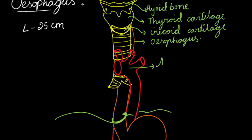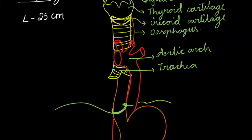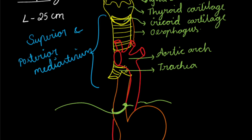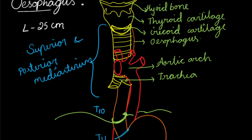There comes the aortic arch, running downward as the thoracic and abdominal aorta, and the trachea with left and right bronchus bifurcation. While running downwards in front of the vertebral column, the esophagus passes through the superior and posterior mediastinum. The esophagus enters the diaphragm at the level of T10 vertebra and ends by opening into the stomach at its cardiac end at the level of T11. These vertebral levels are important to remember.